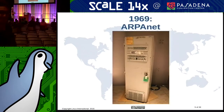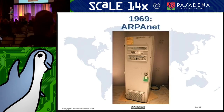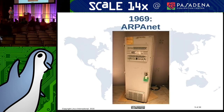Also in 1969 was the beginning of the Internet. This is known as an IMP — one of the endpoints of the ARPANET. You would have one of these at every endpoint and connect your computer systems to them. From this was the very beginning of what we call the Internet and the World Wide Web today.